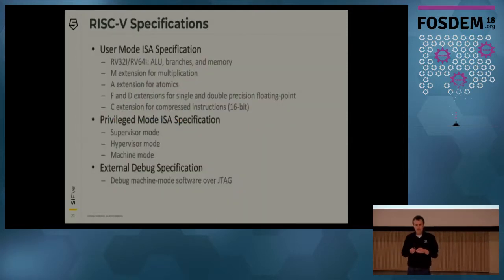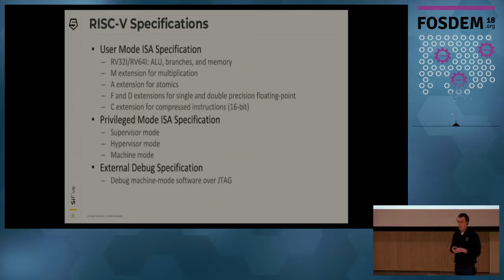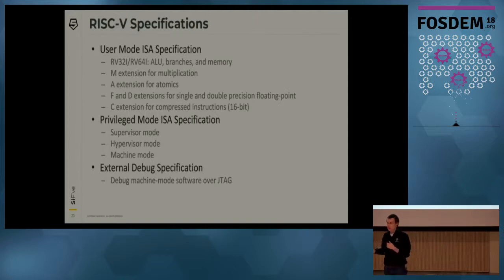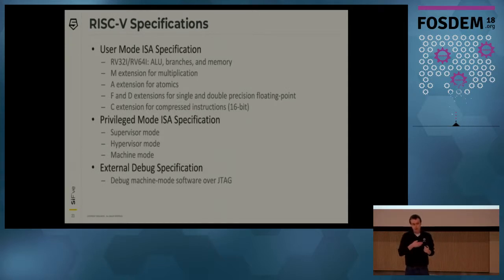The RISC-V specifications are the core of what the RISC-V organization maintains. The RISC-V user specification is designed to be modular — you don't have to implement the whole ISA, you can implement parts of it. This is what allows scalability from low-end all the way up to high-end implementations. In addition to the user ISA specification, there's a privilege mode specification that allows supervisor software like Linux to run, and we also have a hypervisor mode.